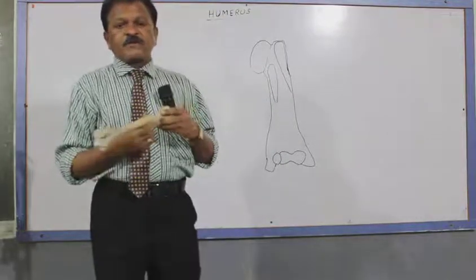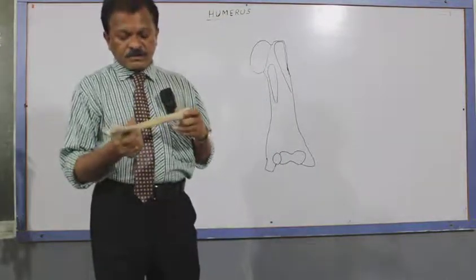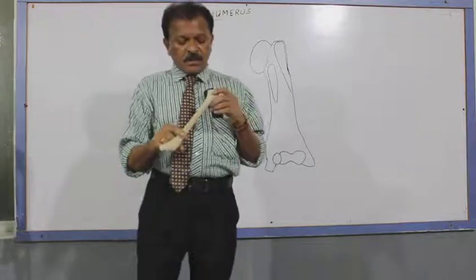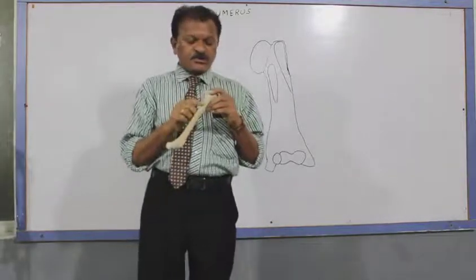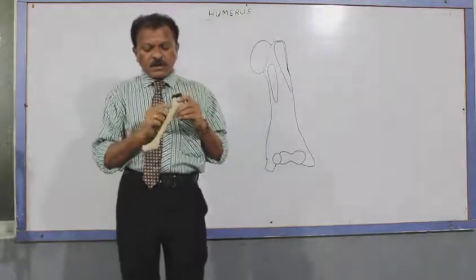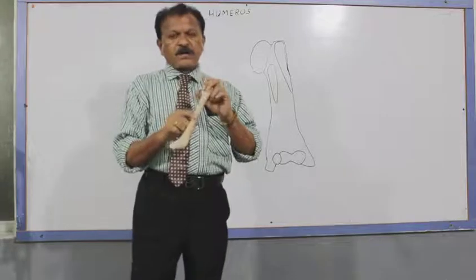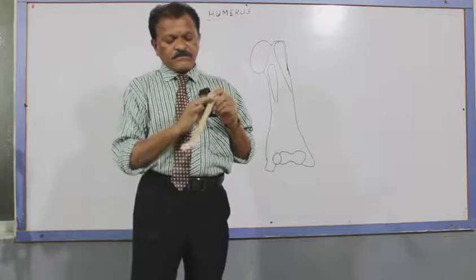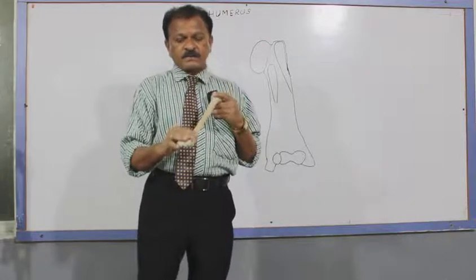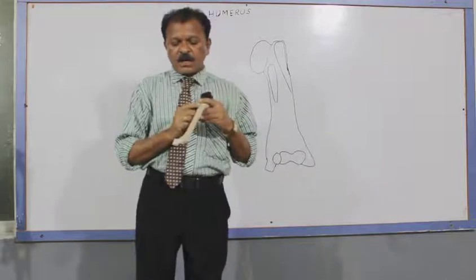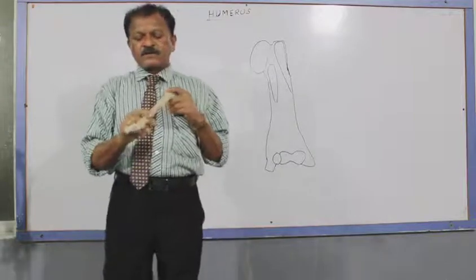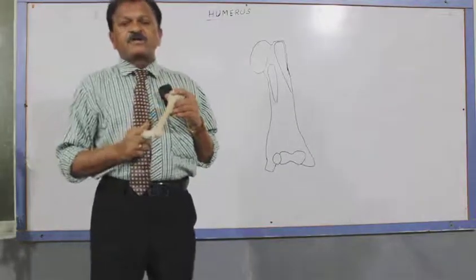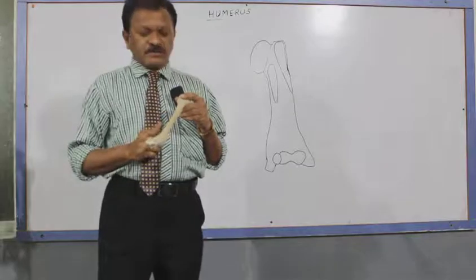Next, the shaft of the humerus. It is placed in between the upper end and lower end. The shaft of the humerus has three borders and three surfaces.